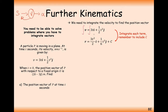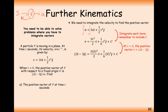Integrating the velocity: 3t integrates to 3t squared over 2, and a half t squared integrates to a sixth t cubed, then plus c. Remember, c is going to be made up of two different components — an i component and a j component. Bear in mind that c is going to be more complicated than just a numerical value; it is actually a vector.